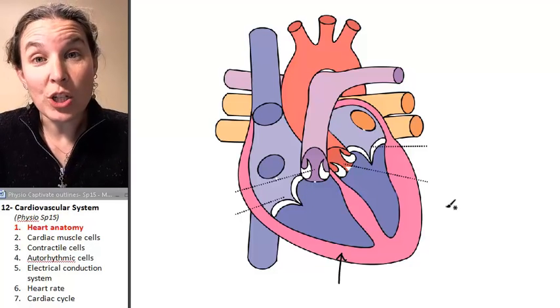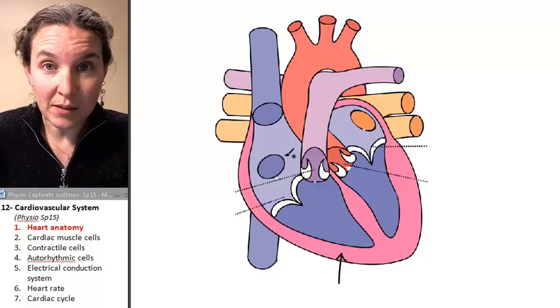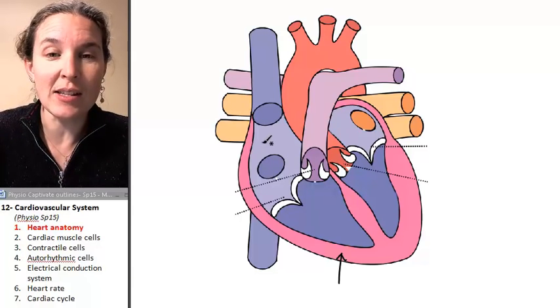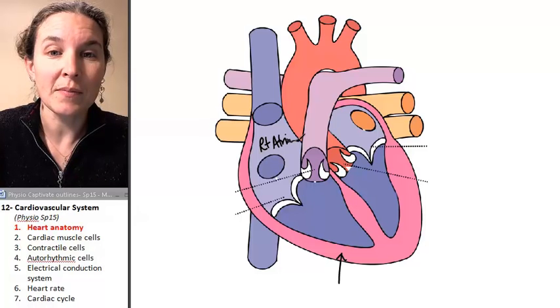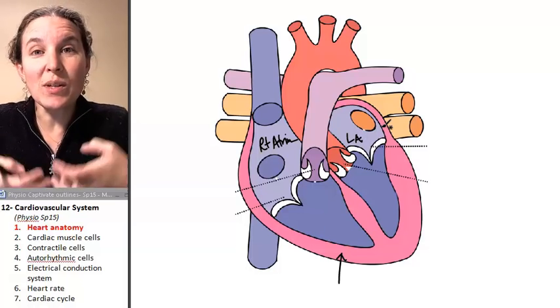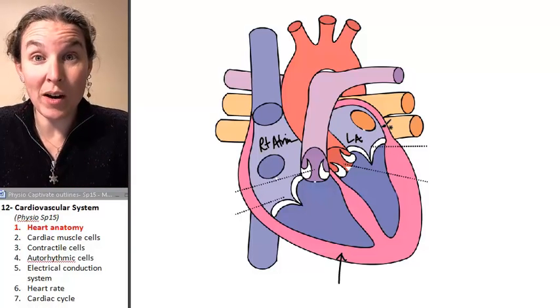We have four chambers in our heart. So in your heart, there are four chambers. You have your atria. This would be my right atrium, and this would be my left atrium. Atria receive blood from somewhere in the body.